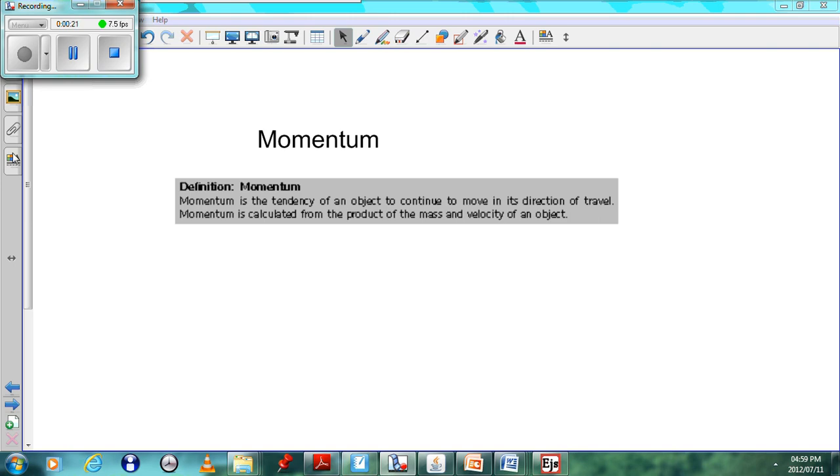Momentum is calculated from the product of the mass and velocity of the object. The unit for momentum is P. So the product of the mass of an object multiplied by its velocity will be defined as momentum. P is equal to M times V.